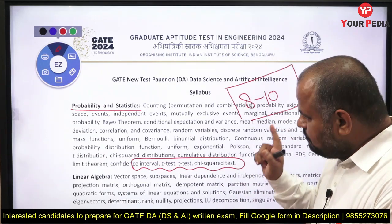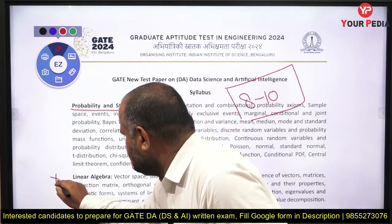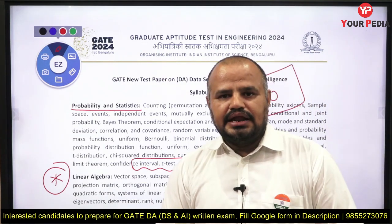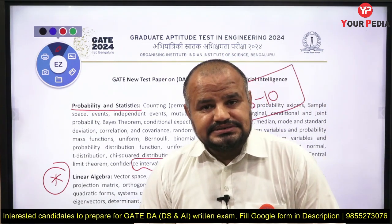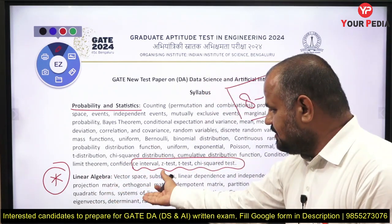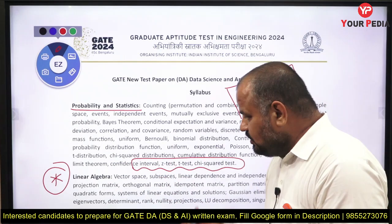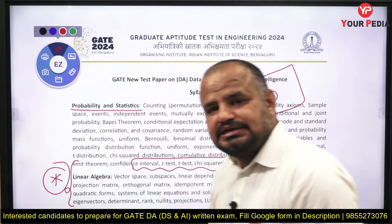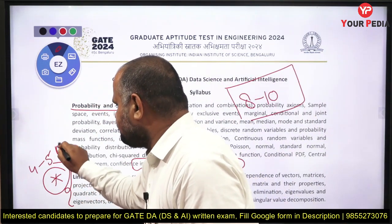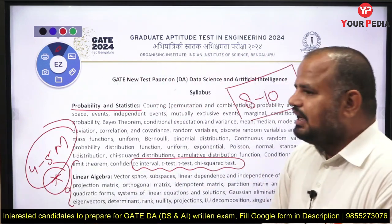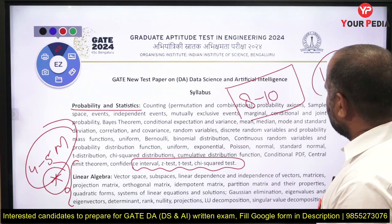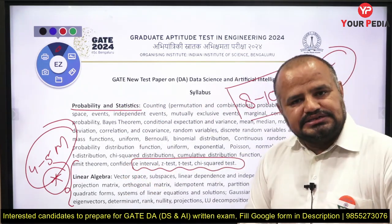Moving towards the next topic — the most important one — linear algebra. Both CSC and non-CSC background students have some familiarity with linear algebra. You may expect 4 to 5 marks from this topic in the field of Data Science and AI. So combined, probability, statistics, and linear algebra account for about 15 marks.